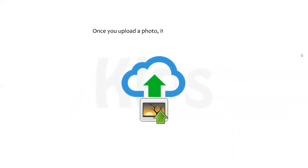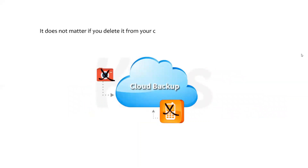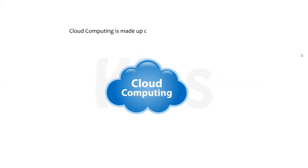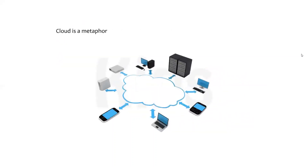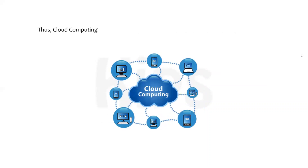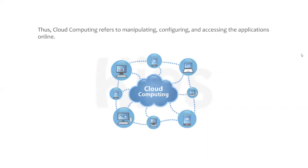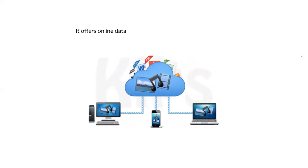Once you upload a photo it stays there forever — it does not matter if you delete it from your camera or phone, it simply stays in the cloud. Cloud computing is made up of two words: cloud and computing. Cloud is a metaphor for the internet, hence it means computing on the internet. Thus, cloud computing refers to manipulating, configuring, and accessing applications online. It offers online data storage, infrastructure, and applications.